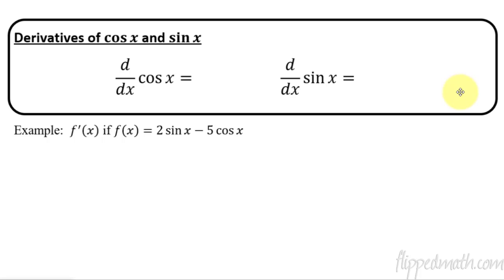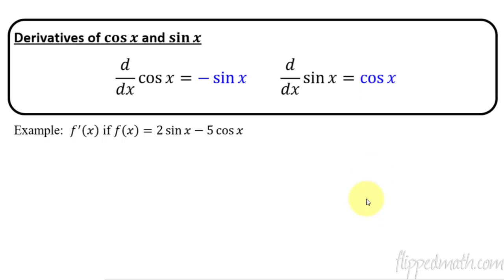First off is the derivative of cosine. This is just something you have to memorize. The derivative of cosine is negative sine x. We could prove it but we're not going to in this lesson — we're just going to tell you the rule and you memorize it. The derivative of sine is cosine x, and it's positive. So the derivative of sine is cosine, and the derivative of cosine is negative sine. Sure would be nice if it was just sine, but it's negative sine.